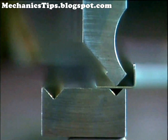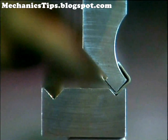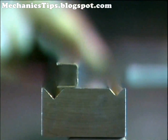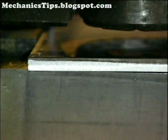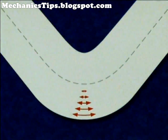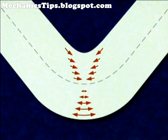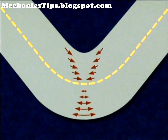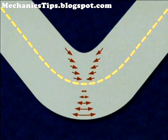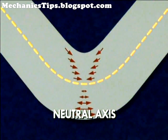The bending forces, however, rest between the material's yield point and its tensile strength. In shearing, the forces used are well above the material's tensile strength. As the part is bent, it undergoes a distortion so that the material outside the bend is forced to stretch under tension, and the material inside the bend is forced to compress. Between the tension and compression zones is an area where the material is neither forced to stretch nor to compress. This is called the neutral axis.